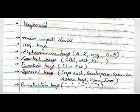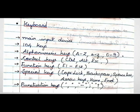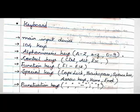One of the examples for input devices is the keyboard. All of you might have seen a keyboard. It is a main input device for computers. Its standard keyboard has 104 keys, which are alphanumeric keys — that is from capital letter A to Z, small letter A to Z, and the numbers 0 to 9.